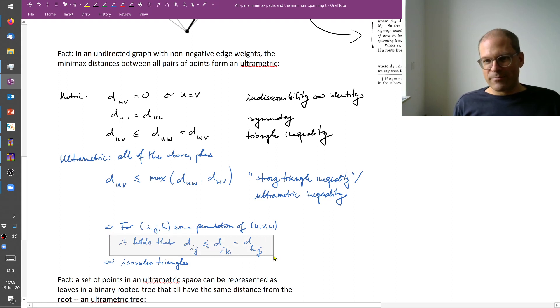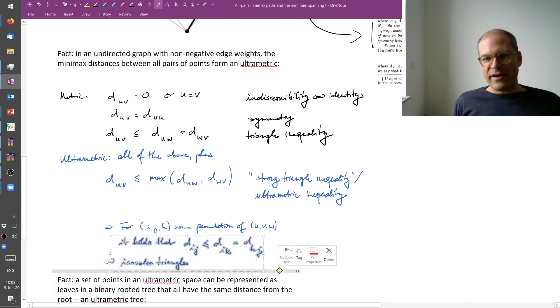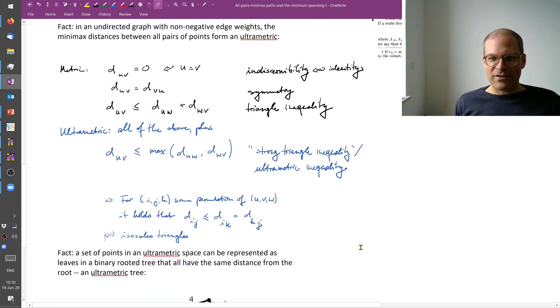This statement here implies that if I look at all three inequalities, I will find at least one, which says that Dij is less than Dik and Dik is the same as Dkj. That means, geometrically speaking, that we are always looking at triangles with two identical sides. These are also called isosceles triangles. And hence this ultrametric space is sometimes called an isosceles space.